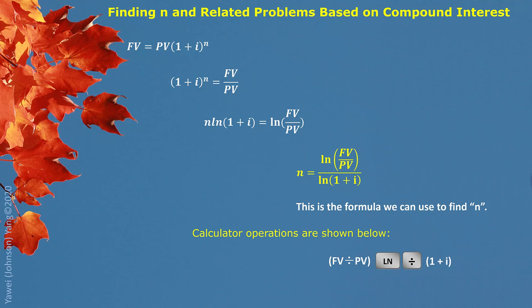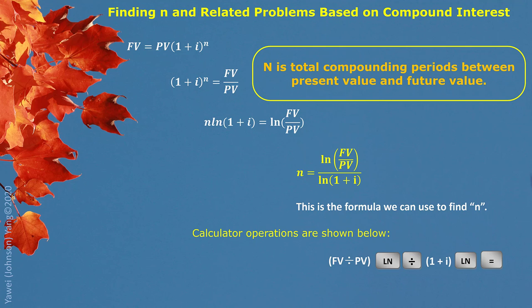If we use calculator to operate this formula, here on the screen at the bottom, shows you how the calculator should be run. Again, n is the total compounding period. So after we finish solving this question, we need to have a proper unit followed. If the interest compounded monthly, then n comes out. The answer means months. If the interest compounded quarterly, then the number after calculation should mean quarters.